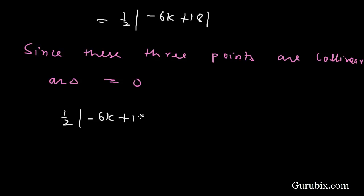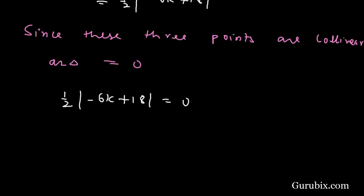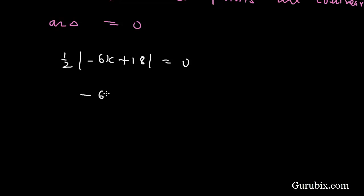This means -6k + 18 = 0, which gives -6k = -18, so k = 3. This is the solution of the question. Thank you.